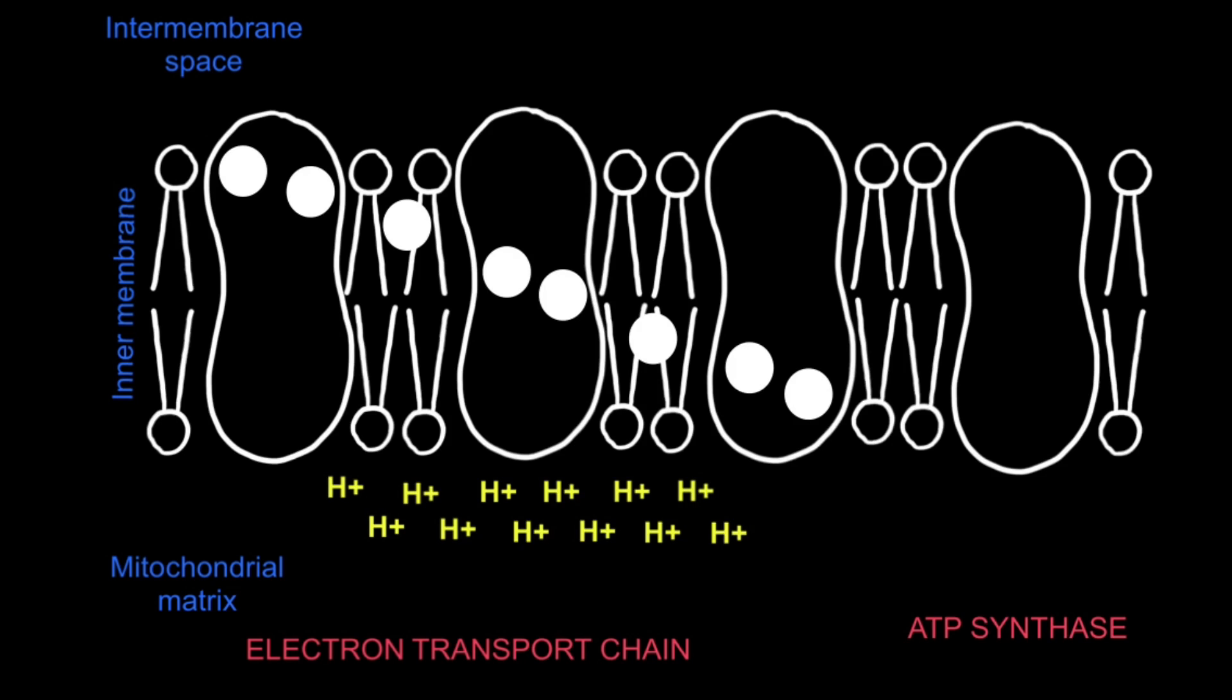After glycolysis, the link reaction and the Krebs cycle have taken place, the reduced form of the electron carriers, that is NADH and FADH2, are sources of electrons for the electron transport chain.